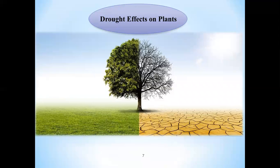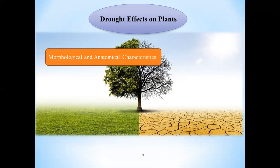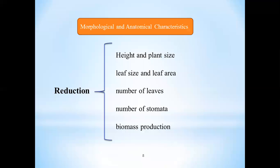Drought effects on plants. To be honest, I cannot go into the details in this video and I will explain briefly. One, morphological and anatomical characteristics. Drought stress leads to decreasing height and plant size, leaf size and leaf area, number of leaves, number of stomata - I will explain more about stomata in the next slide - and also reduction of biomass production. While the root to shoot ratios of plants usually increased for water uptake, however, the total biomass of plants are reduced considerably.